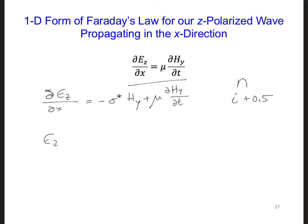If we do this, we get Ez i plus 1 at n minus Ez i at n, all divided by delta x, is equal to minus sigma-star Hy at n and i plus 0.5 plus mu Hy i plus 0.5 n half time step into the future minus Hy i plus 0.5 and a half time step into the past, all that divided by delta t.